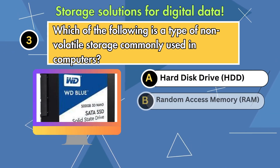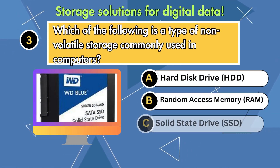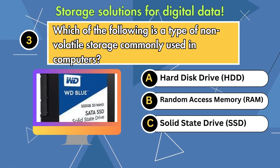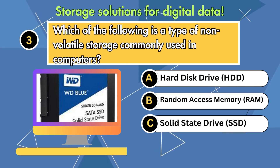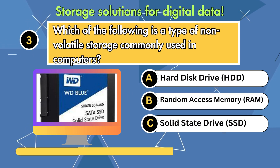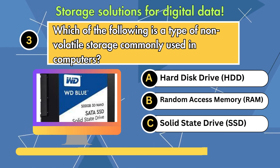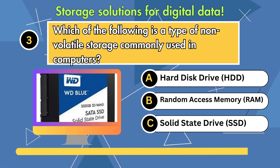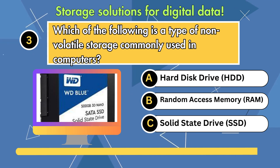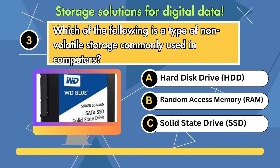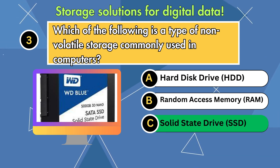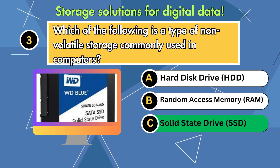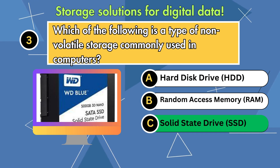Which of the following is a type of non-volatile storage commonly used in computers? Option 1: Hard Disk Drive (HDD). Option 2: Random Access Memory (RAM). Option 3: Solid-State Drive (SSD). Answer is Solid-State Drive (SSD).